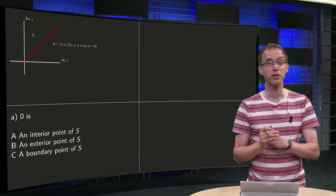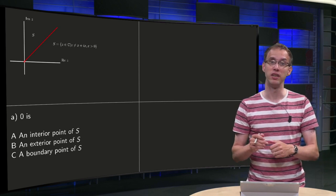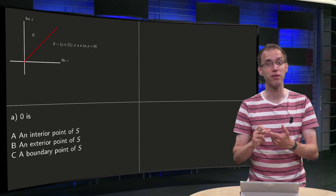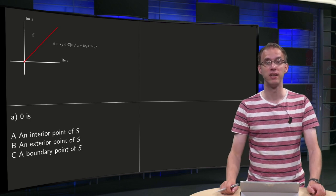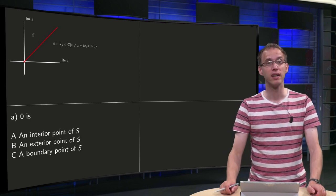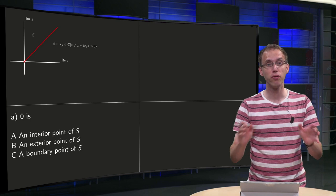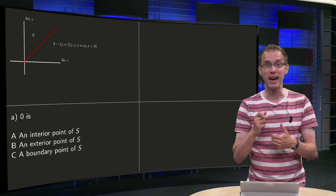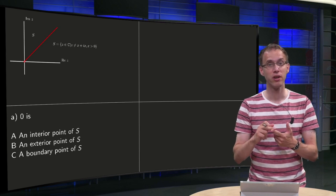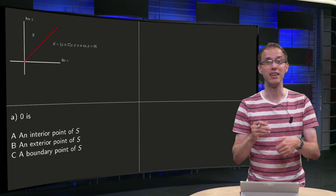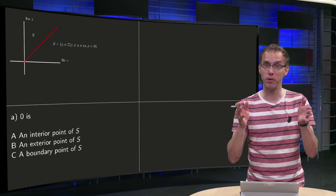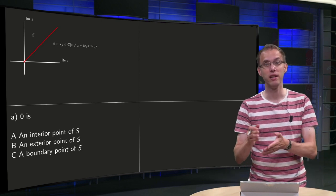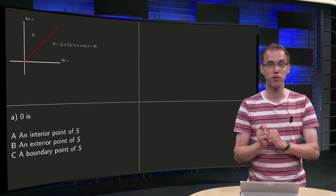First question: what can we say about the origin? Is the origin an interior point of S, an exterior point of S, or a boundary point of S? A point is either interior or exterior, and a boundary point is defined as being neither interior nor exterior, so it will definitely be one of those three.